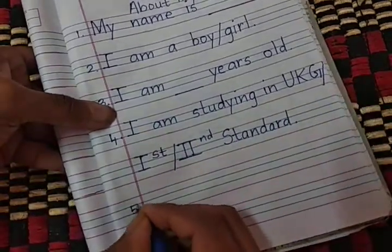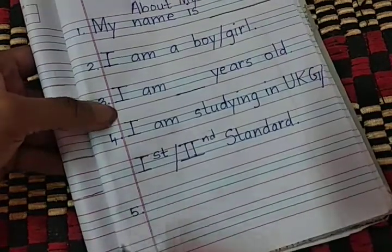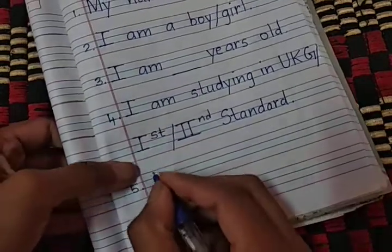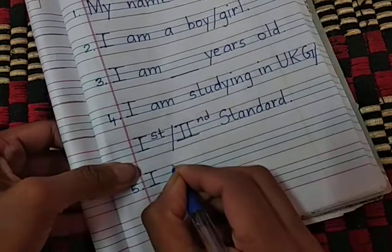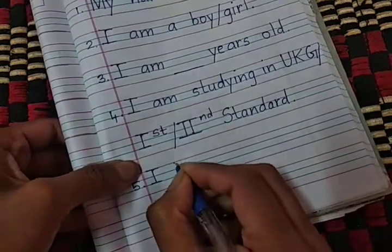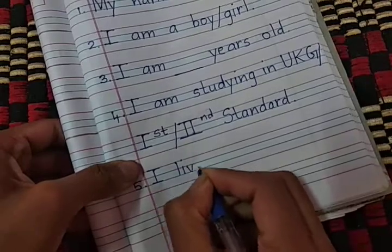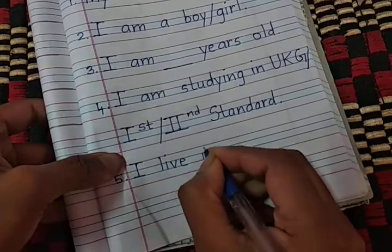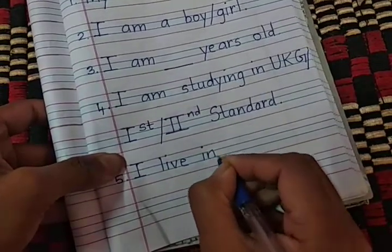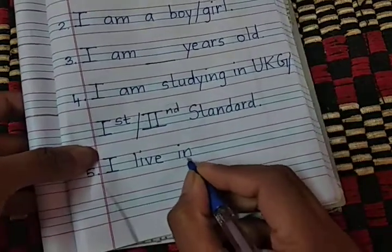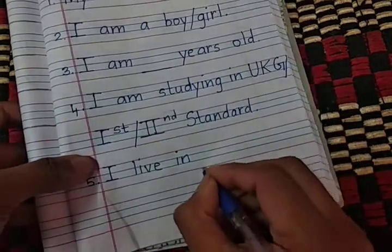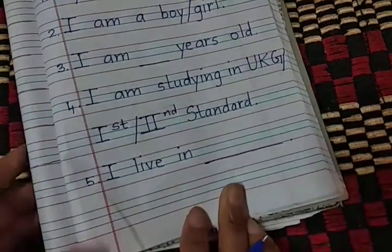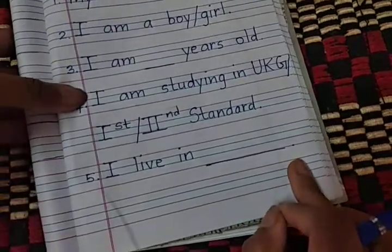The fifth sentence: where do you live? Write I in capital, give a space, then L-I-V-E in small, give a space, then I-N, give a space, and write a dash. Whatever city or place you live in, write the name there, and then give a full stop after the sentence.